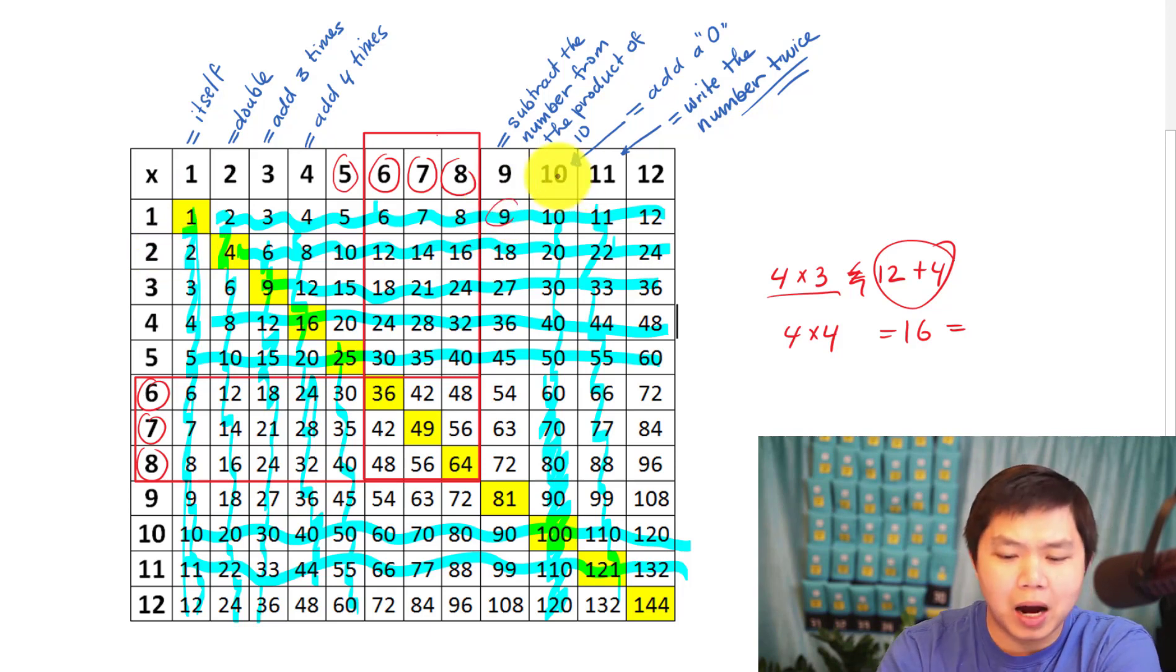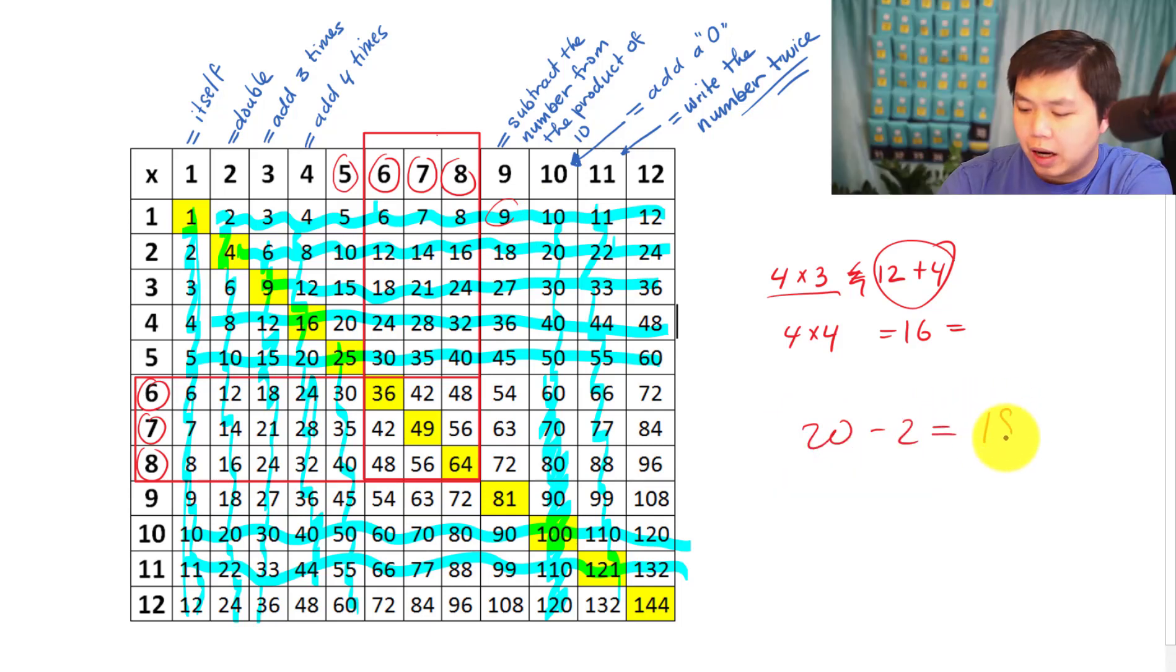What about two times nine? Well, look at two times ten is twenty. Twenty minus two is what? What's twenty minus two? Let's do this in my head. Eighteen. Isn't that easy? Let's choose a number. How about seven? Seven times ten is seventy. Minus seven. What is that? Sixty-three. Is that right? Yes. There you go.